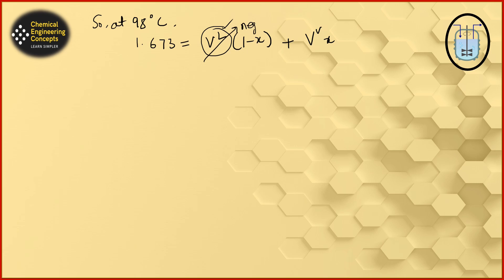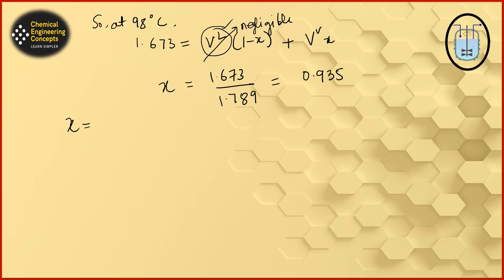If the liquid volume term is negligible, we can find the vapor fraction x. The x value is 1.673 divided by the vapor volume 1.783, giving a fraction of approximately 0.935. Quality x can also be defined as the mass of vapor divided by the mass of liquid plus mass of vapor.